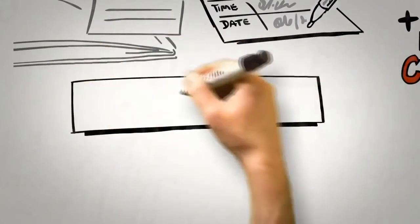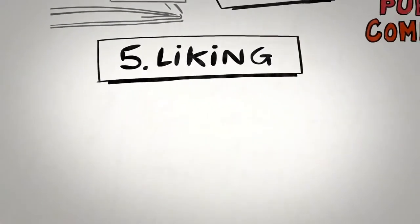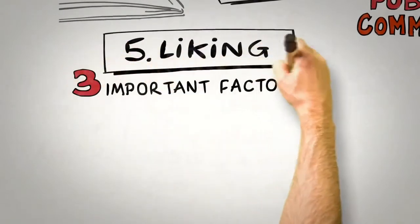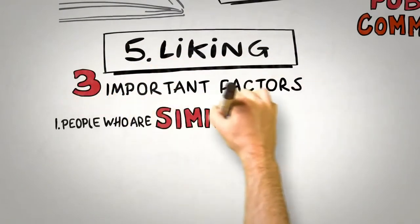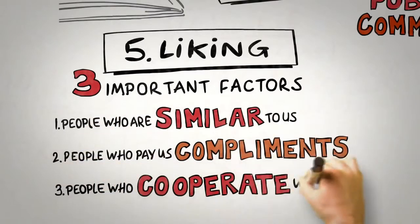The fifth principle is the principle of liking. People prefer to say yes to those that they like. But what causes one person to like another? Persuasion science tells us that there are three important factors. We like people who are similar to us. We like people who pay us compliments. And we like people who cooperate with us towards mutual goals.